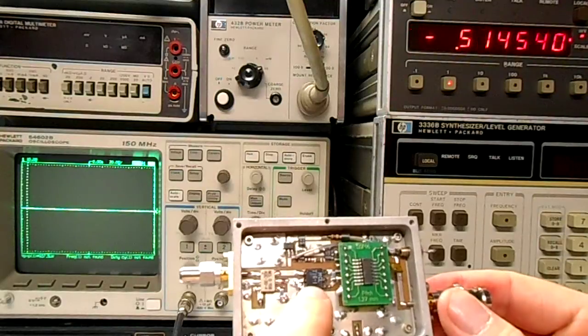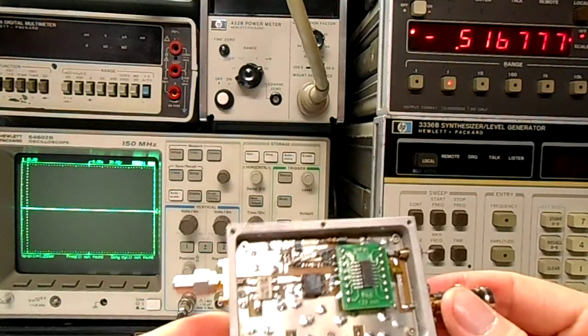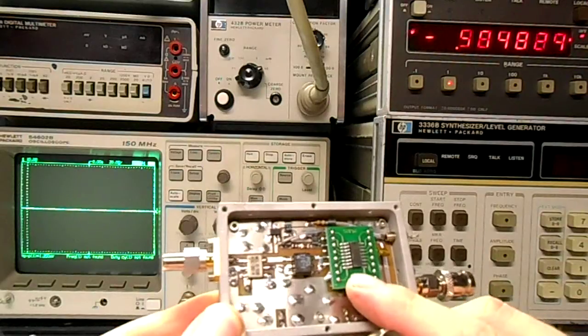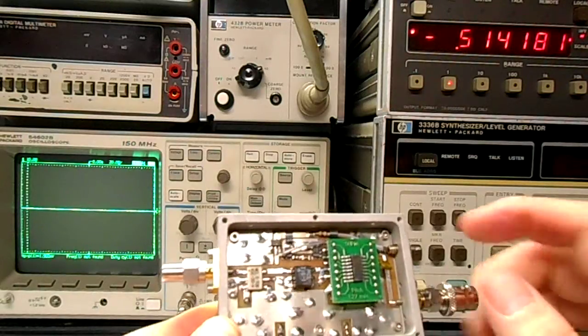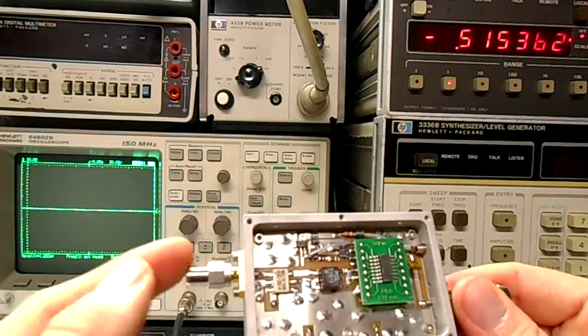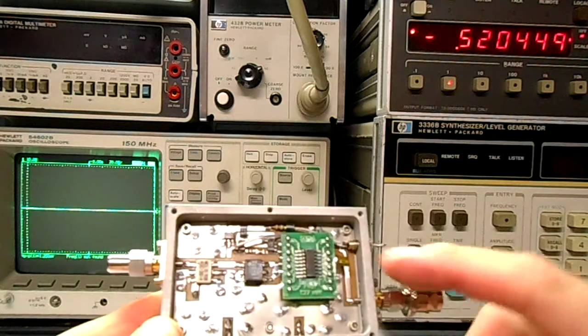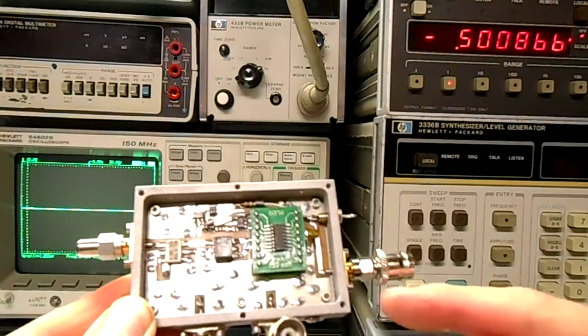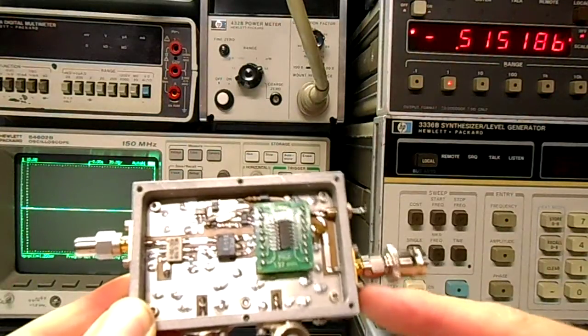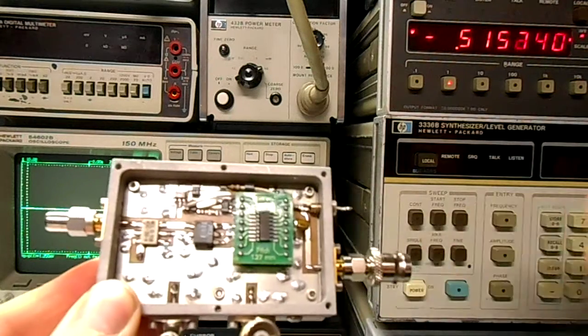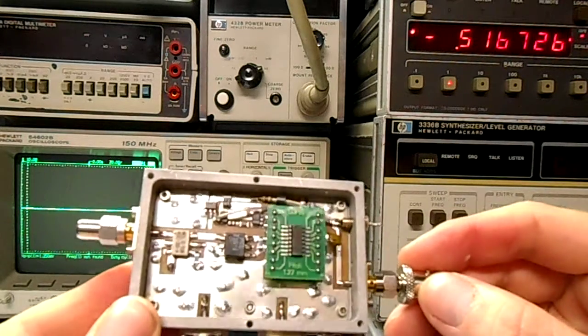This black device right here is an impedance matching transformer. The AD8306 has a 1000 ohm input impedance. Of course we need to match that back to our 50 ohm input impedance. DC output is then sent to this paddle mount SMA jack right here. This will go off to the analog to digital converter stage which I haven't constructed yet.